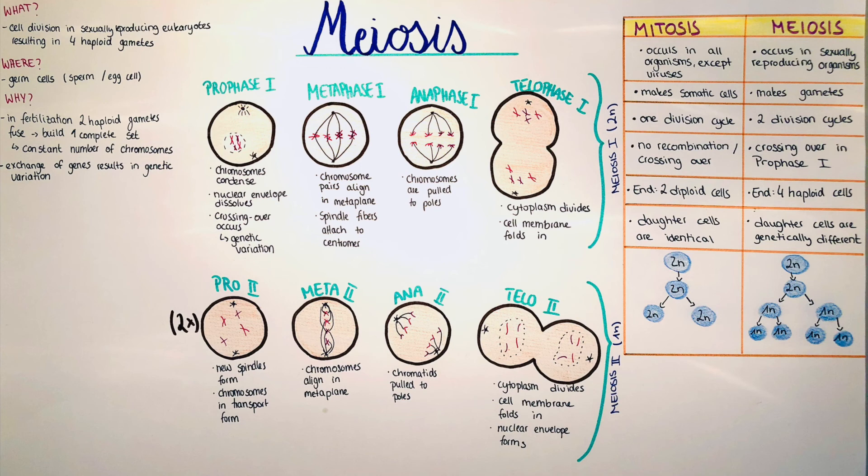Then in mitosis, the end result is two diploid cells, and in meiosis the end result is four haploid cells. In mitosis, the two daughter cells are identical with each other, and in meiosis all the four daughter cells are genetically different. This is due to the diploid cell which is formed by the fusion of the sperm cell and the egg cell, and then with the crossing over and in the metaphase that the chromosomes are pulled in different sections of the cell, and then again later the chromatids being divided from each other.